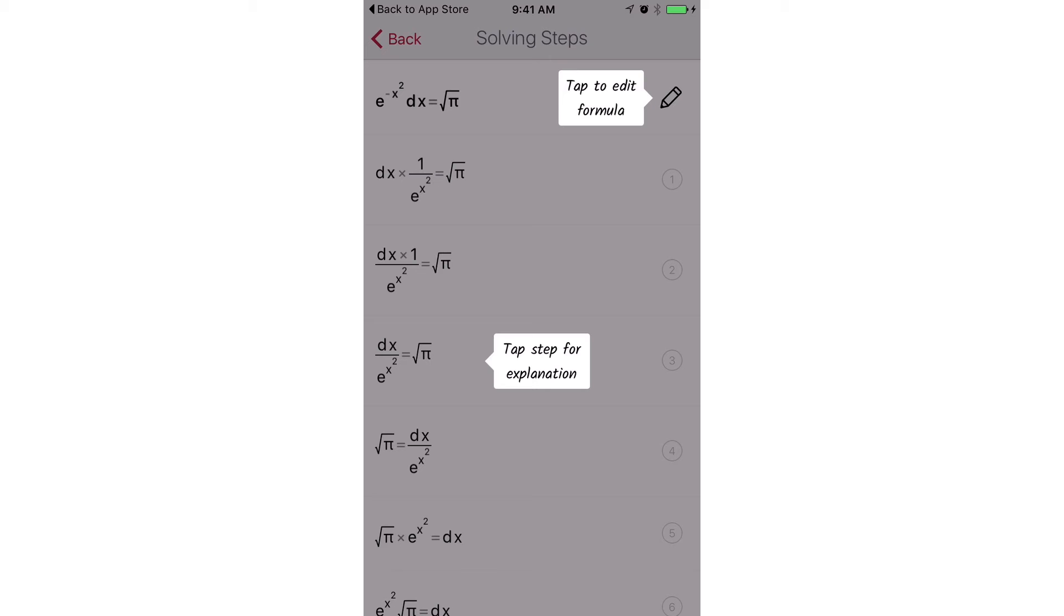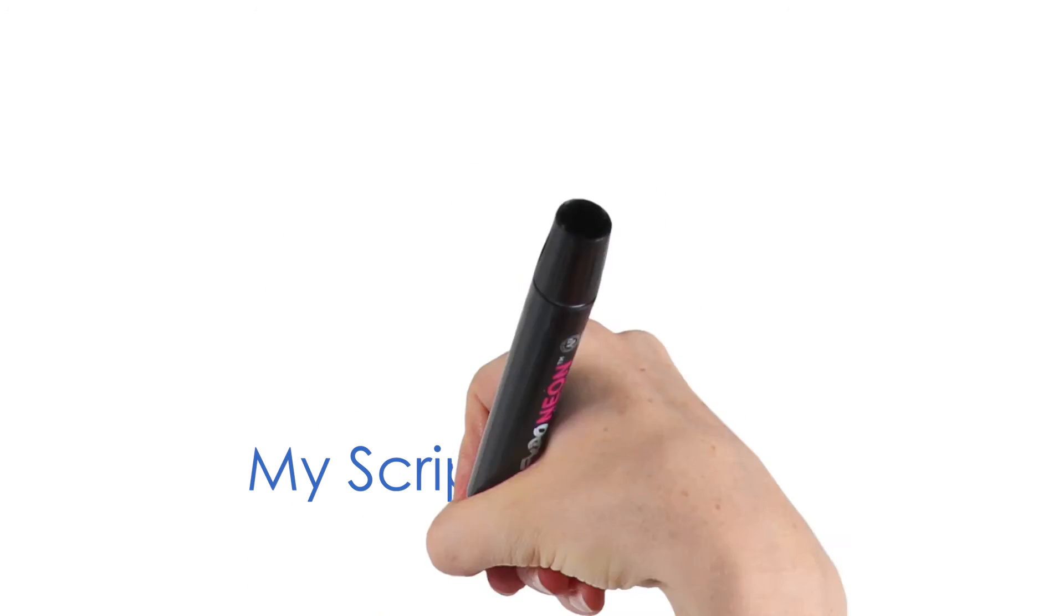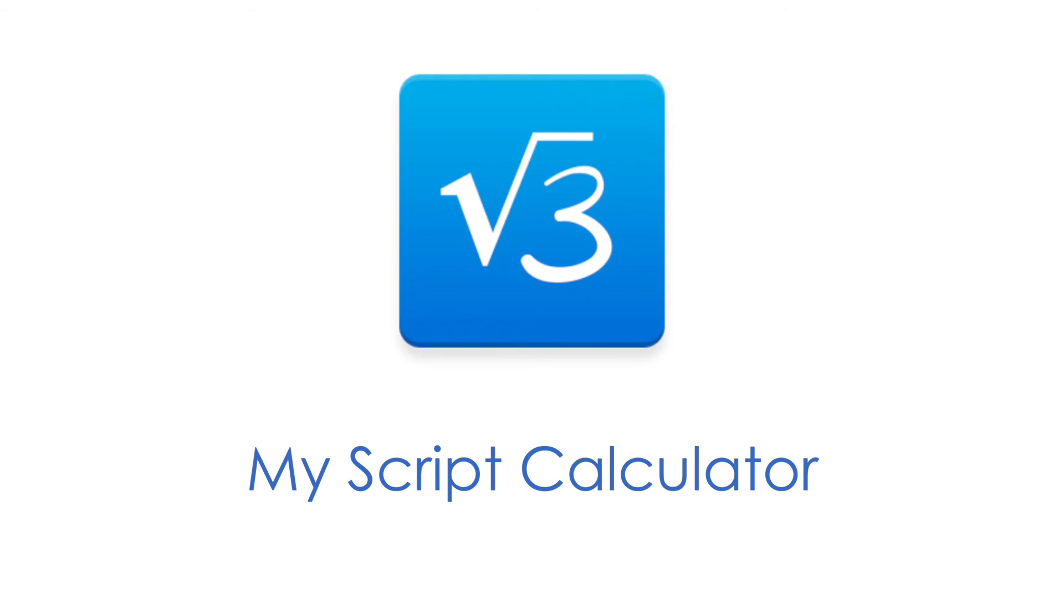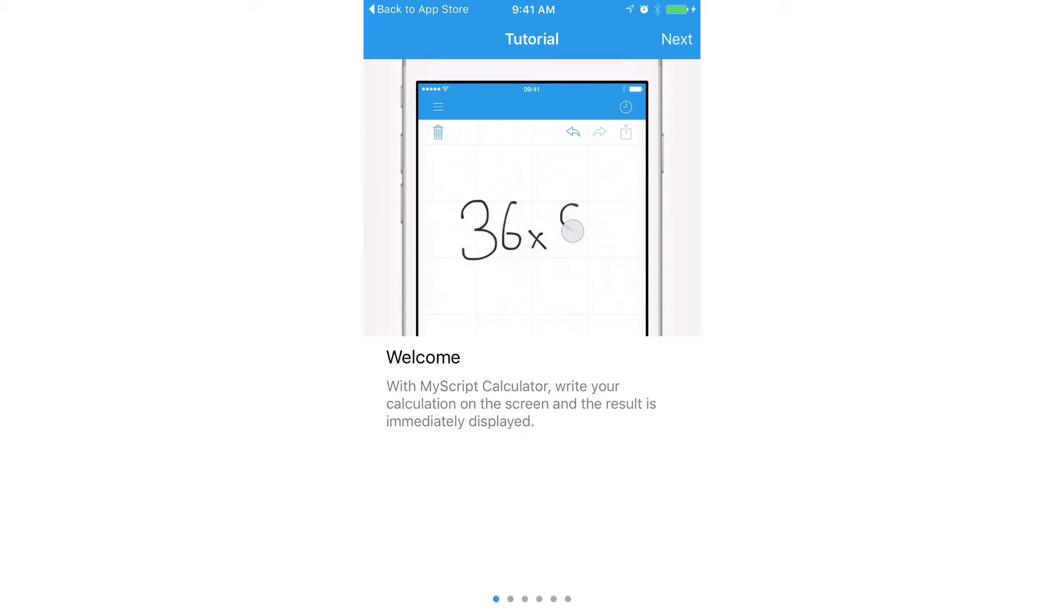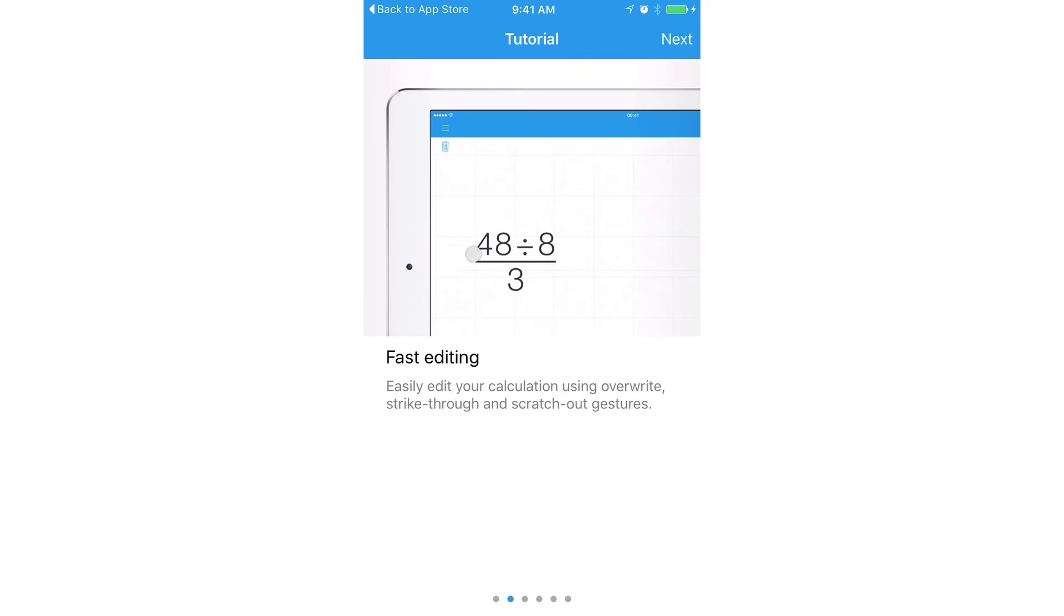MyScript Calculator is also a free app. If you'd rather write out your equations versus typing them, this app could work for you. You can use your own handwriting to write out the equation and the app calculates the answers for you. You do not have to use a keyboard. Scratch-out gestures can easily delete symbols and numbers.